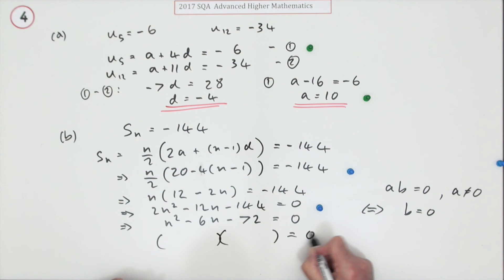Anyway, factorize it. Must be n, n. Factors of 72 that differ by six, because that's six, twelve's negative must be the larger one. So that gives me two answers: n is negative six, n is 12. That means n must equal 12, simply because n is greater than zero. There's the last mark.